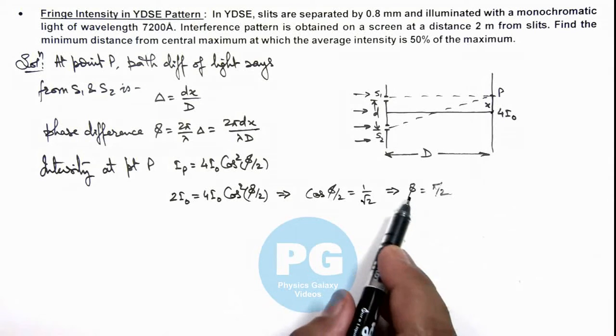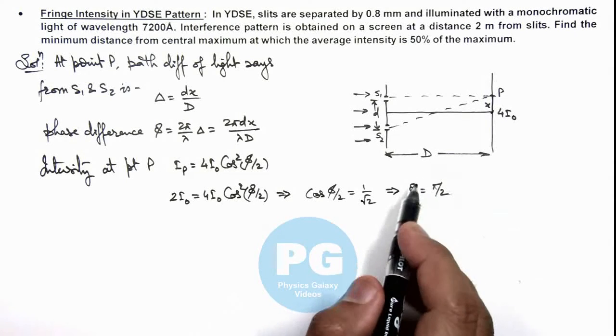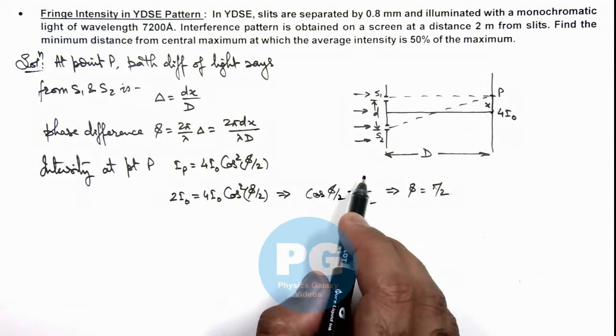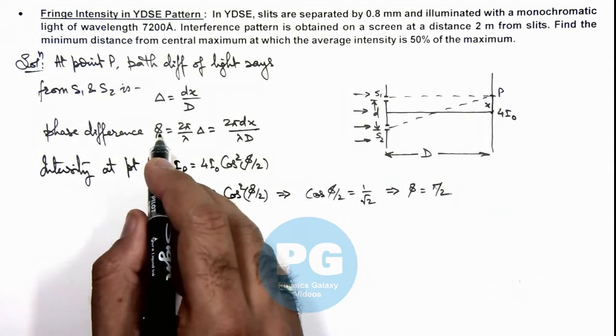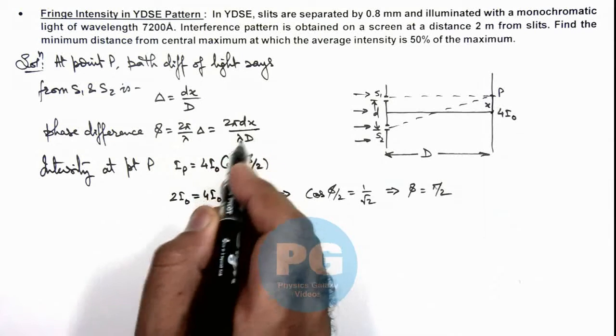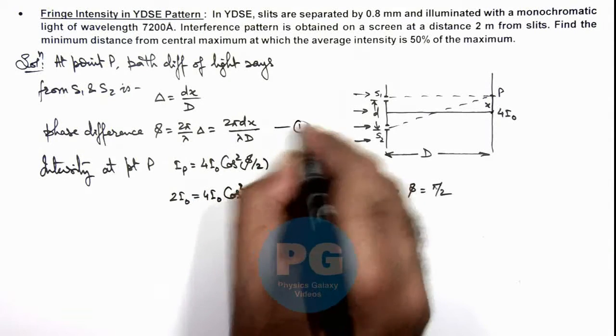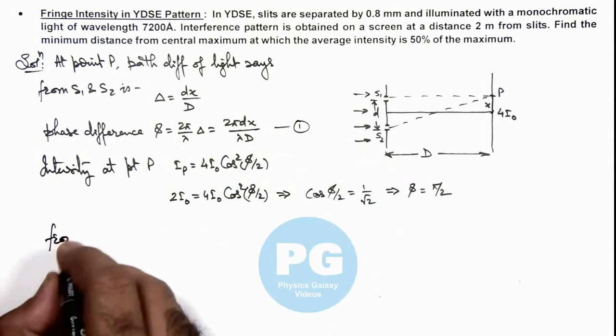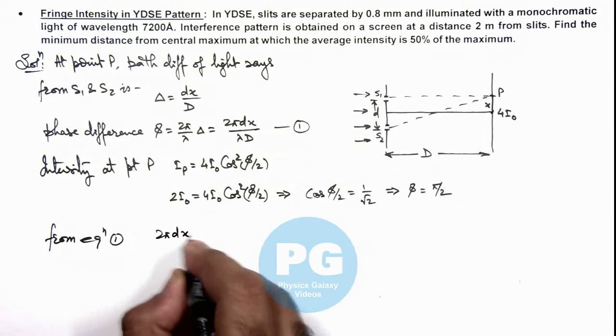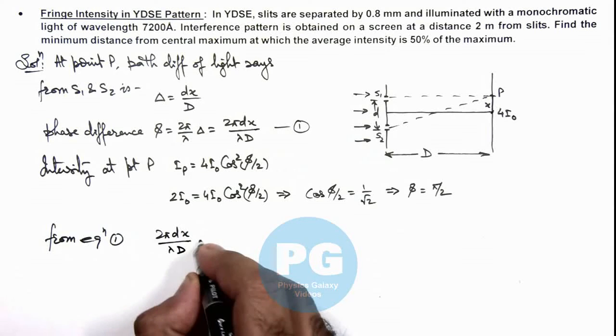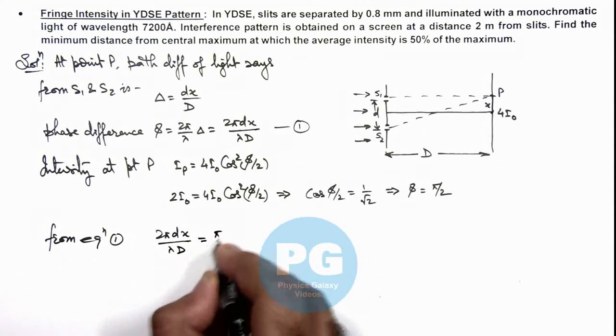So if we have got the value of phase difference, correspondingly we can calculate the path difference. So here we can equate this phase difference with 2π dx by λD. If this is equation 1, so we can write from equation 1, 2π dx by λD should be equal to π/2.